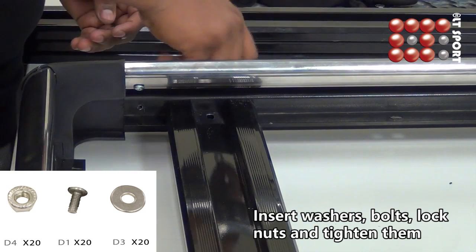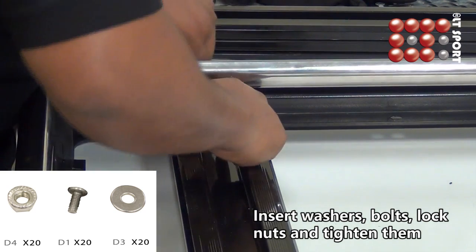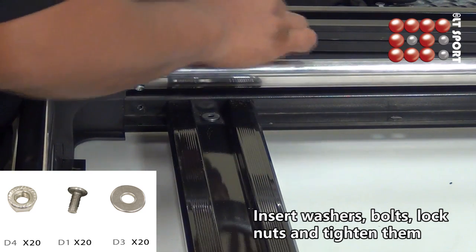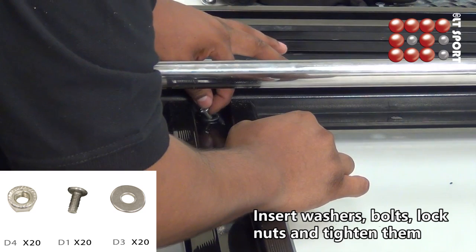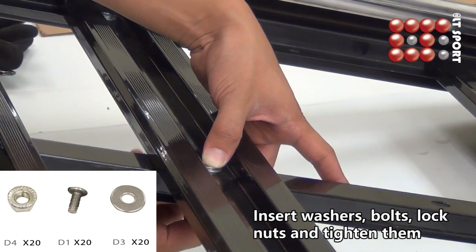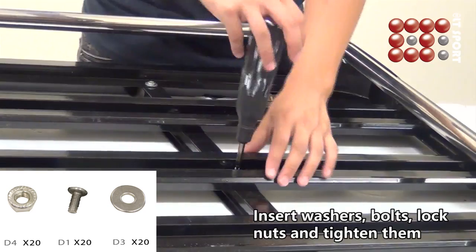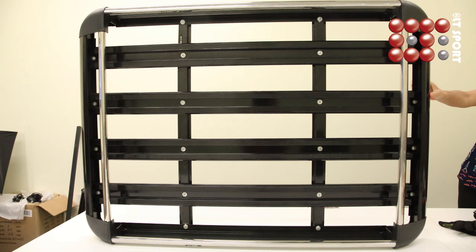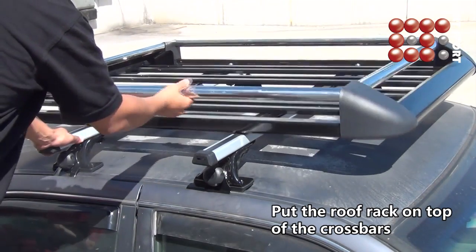Now we are at the last part: installation on vehicle. Please put the roof rack on top of the vehicle first. Align the bottom bar of the roof rack with the crossbars on vehicle.